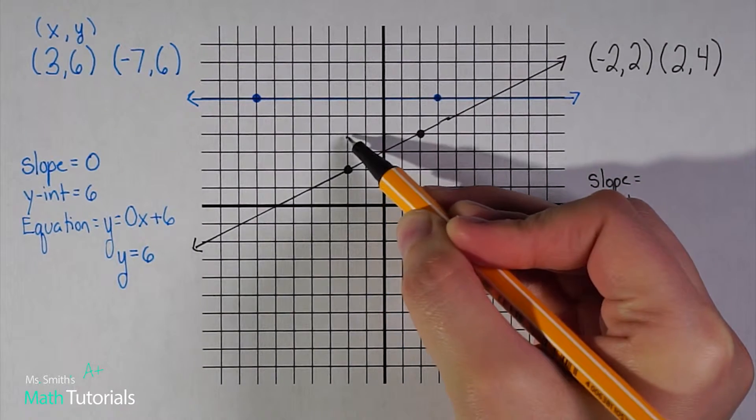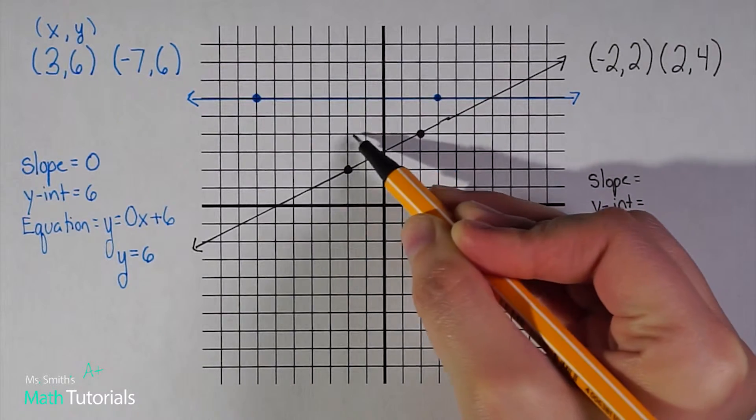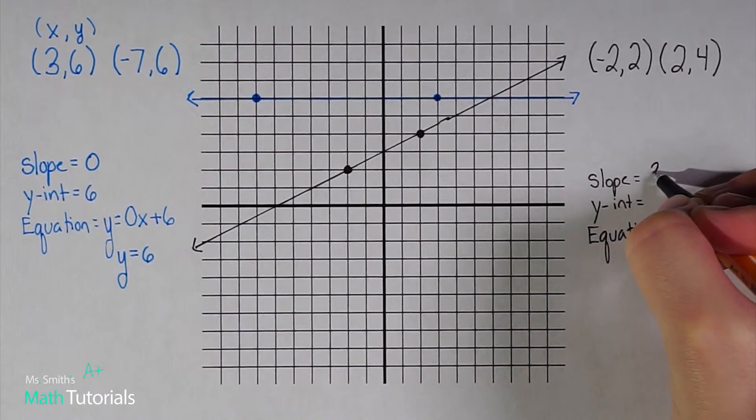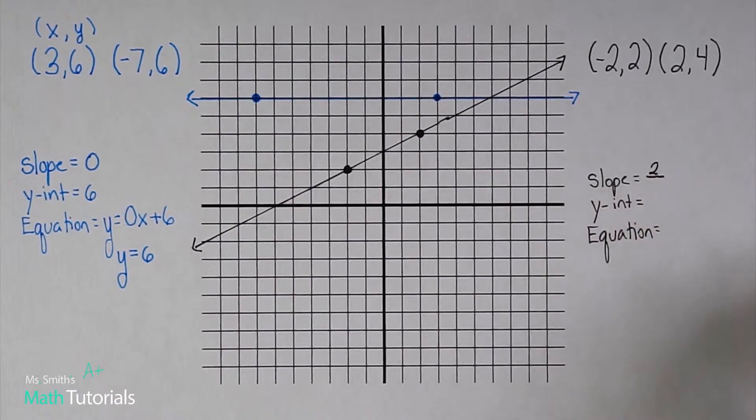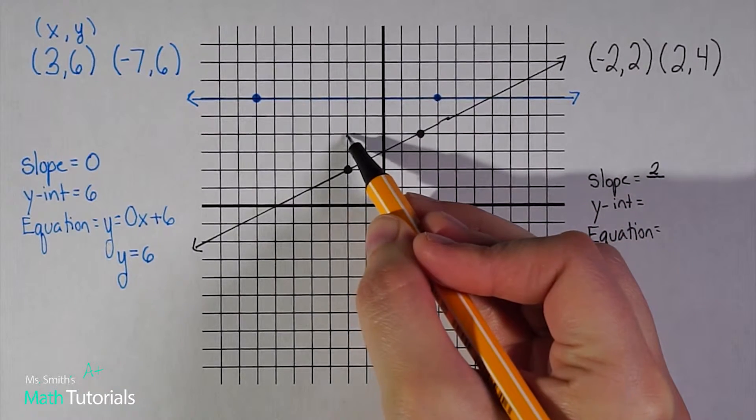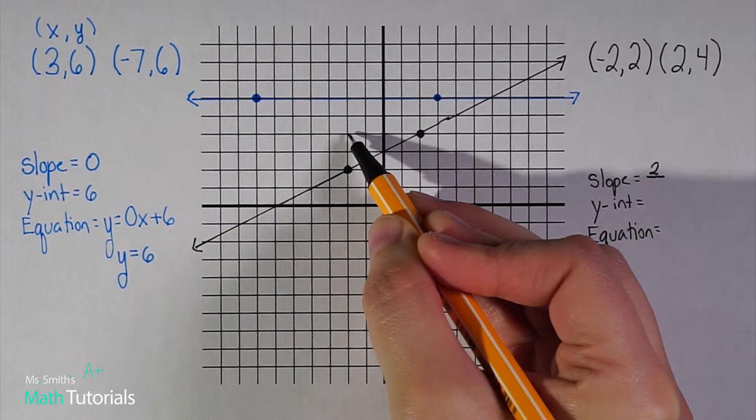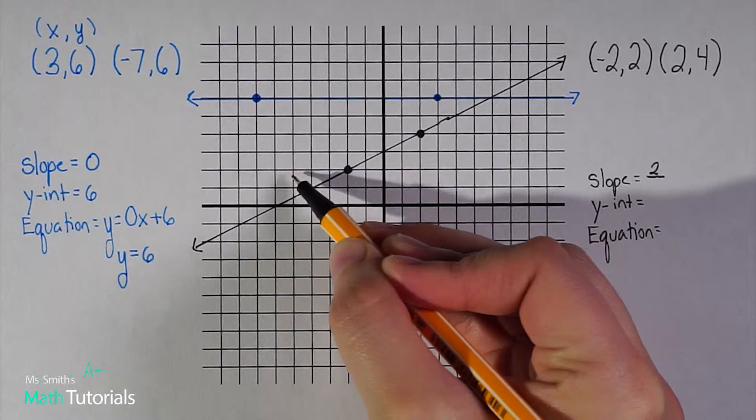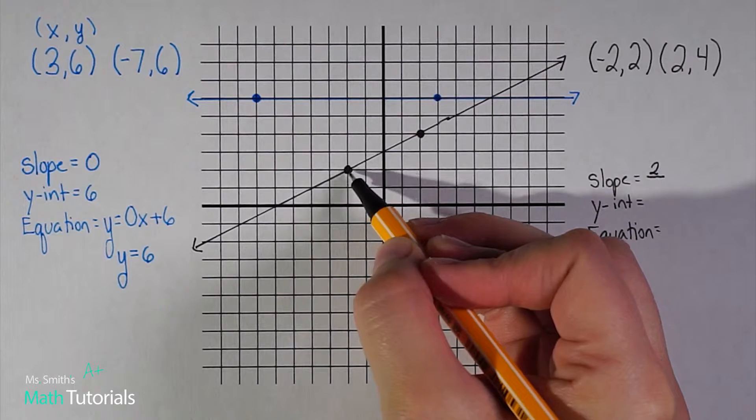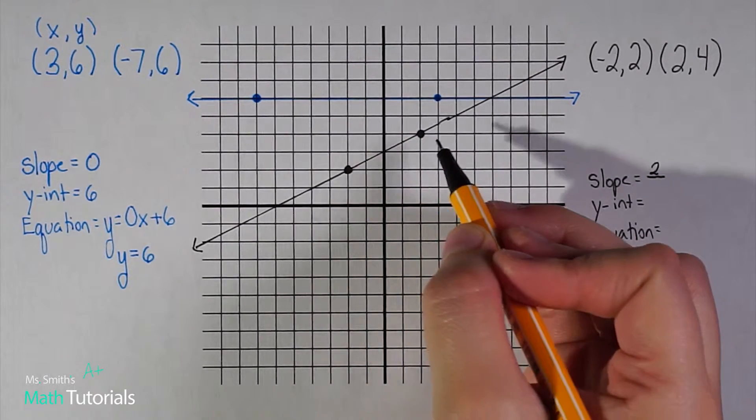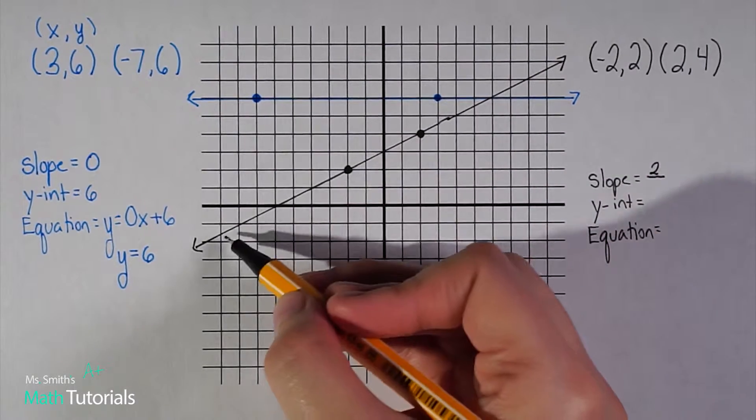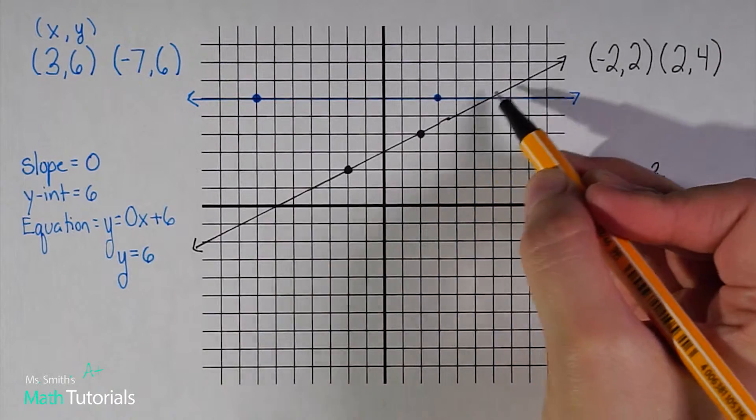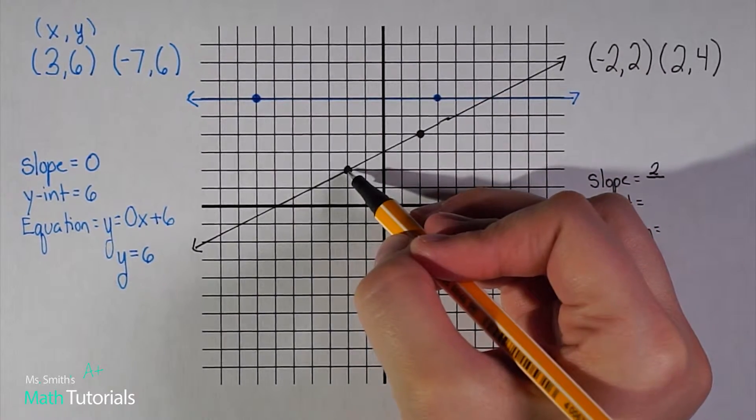Let's see how many do we rise? I rose one, two. I'm on par with that next point, so I rose two. That's my change in y. Now I need my change in x, how many I ran. Moving to the right means I'm positive. If I was moving down or to the left, that means negative. But I'm moving up and to the right, so I know it's going to be a positive slope.